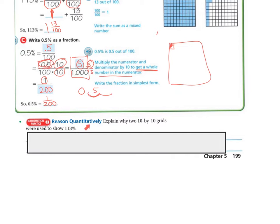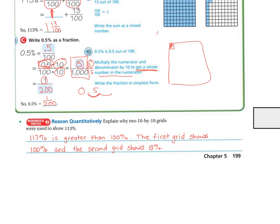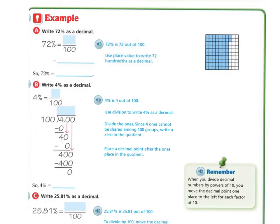Reason quantitatively. Explain why two 10 by 10 grids were used to show the 113%. Remember that 113% is greater than 100%. The first grid shows the 100%, and then the second grid shows the 13%. Together, the 100 and the 13 make the 113%. Let's look at some more examples.